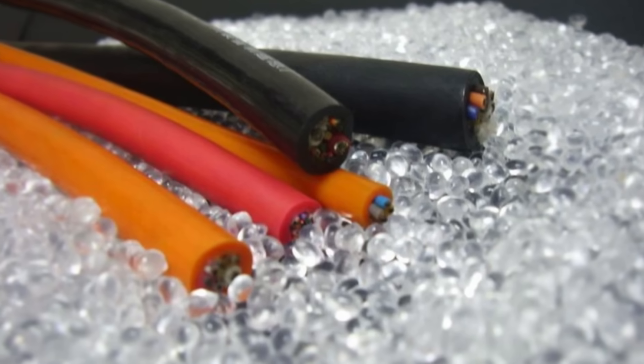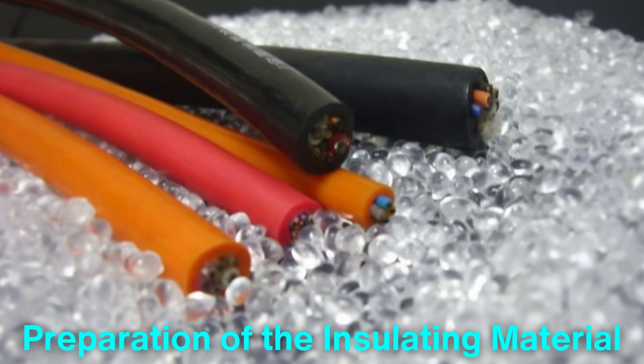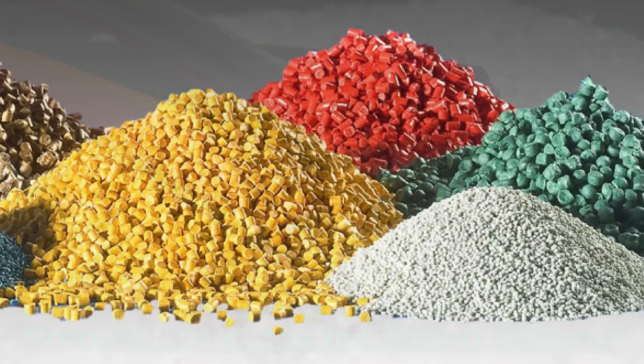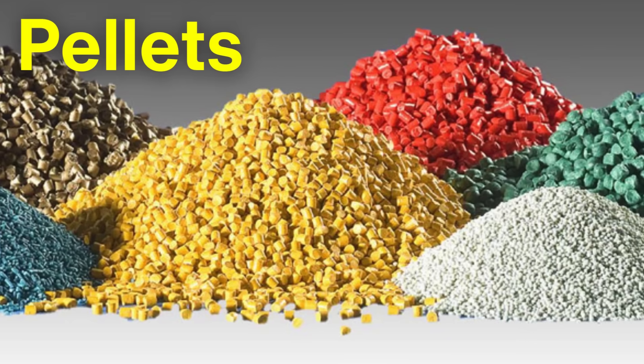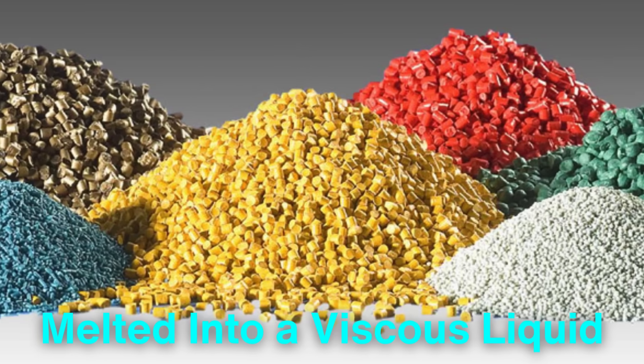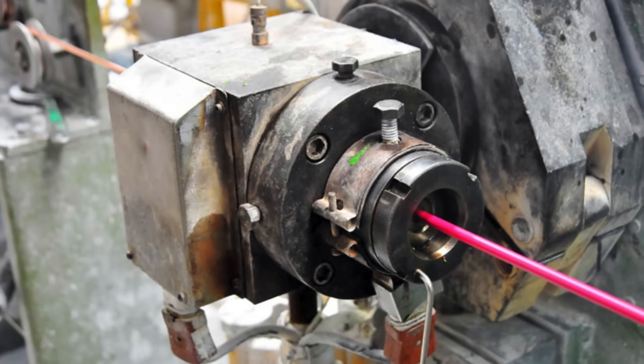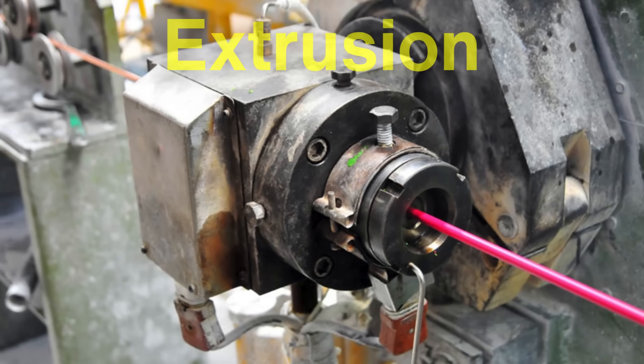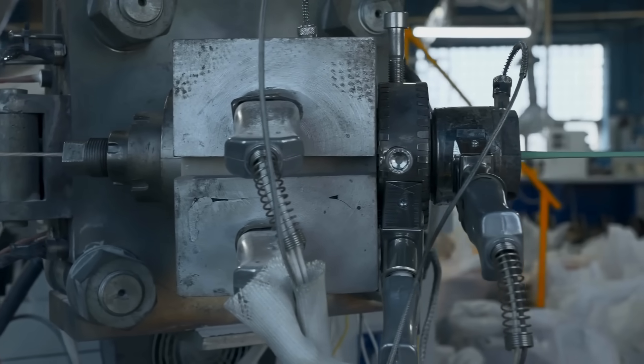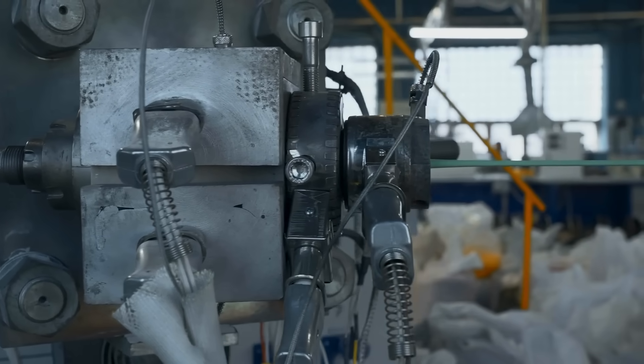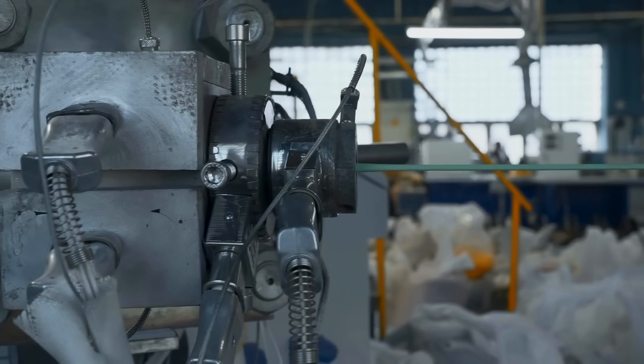The insulation process begins with the preparation of the insulating material. In most cases, the chosen material is delivered in the form of pellets, which are melted into a viscous liquid. This liquid is then applied to the wire through a process called extrusion. During extrusion, the molten plastic is forced through a die and evenly coated around the wire as it passes through.